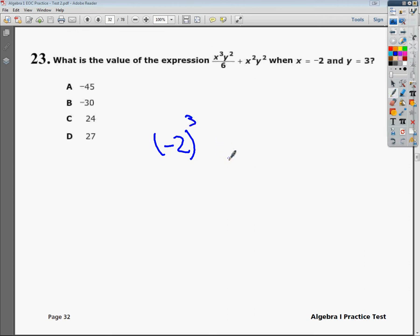So it's going to be this. My y is 3, so I don't have to worry about it nearly as much, over 6, plus x squared, so this is that negative 2 squared thing, and then 3 squared. So what I'm going to do is break everything down in a nice, slow relationship.